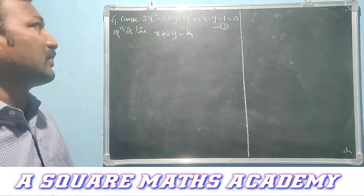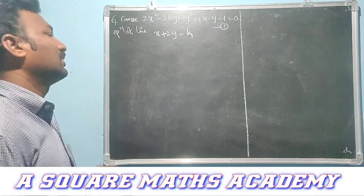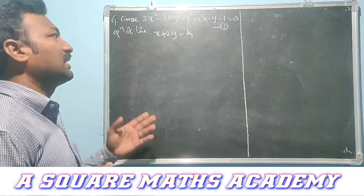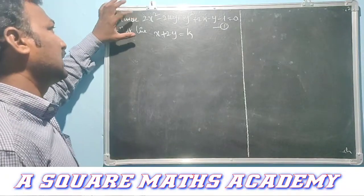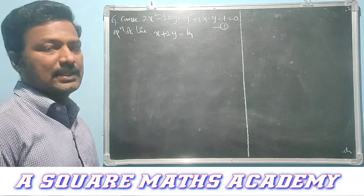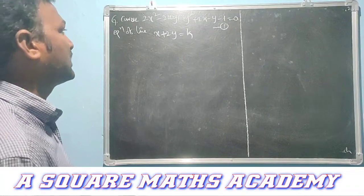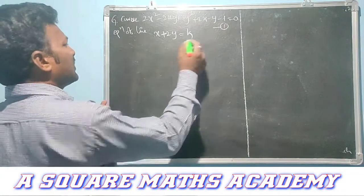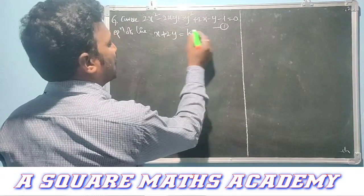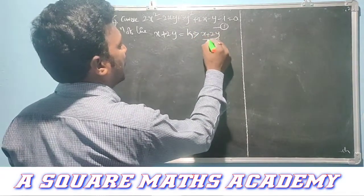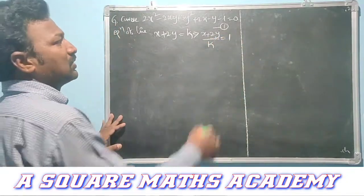The second question: given curve 2x² − 2xy + 3y² + 2x − y − 1 = 0 (equation 1), and line x + 2y = k. If the lines joining the origin to the intersection are perpendicular to each other, find the value of k. Dividing the line equation by k: (x + 2y)/k = 1 (equation 2).